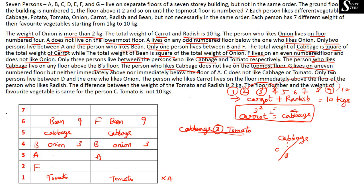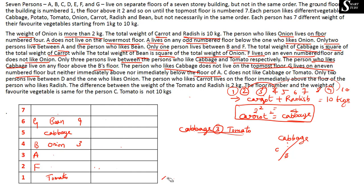G lives on an even-numbered floor but neither immediately above nor immediately below A's floor. A is on floor 3, so G cannot be on floor 2 or 4. The only remaining even floor for G is floor 6, but in one scenario F already occupies floor 6, which eliminates that arrangement entirely.